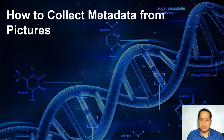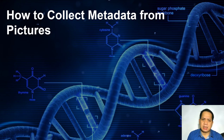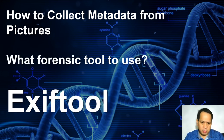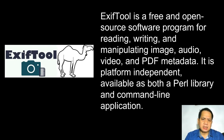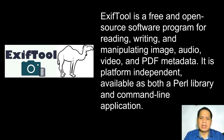Also mentioned is that E01 has the most metadata. Metadata can be collected using an open software tool called ExifTool. ExifTool is a free and open-source software program for reading, writing, and manipulating image, audio, video, and PDF metadata. For example, a digital picture has metadata. Later in the discussion, examples of metadata will be shown.